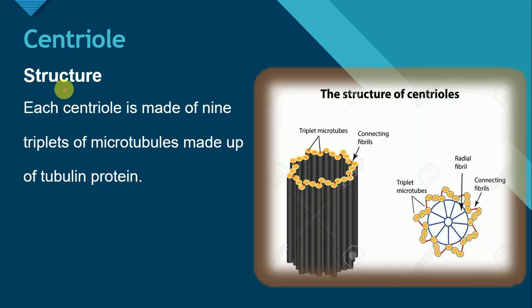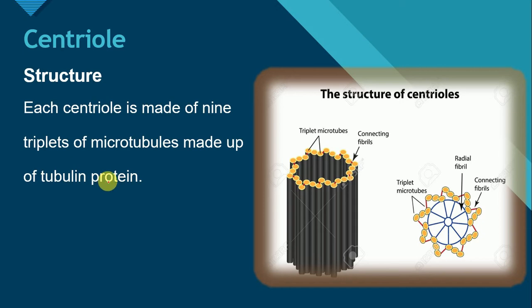Let's see the structure of centrioles. Each centriole is made of nine triplets of microtubules, made up of tubulin proteins. Just have a look at this diagram of a centriole — each centriole consists of nine microtubules. We can count them here: one, two, three...